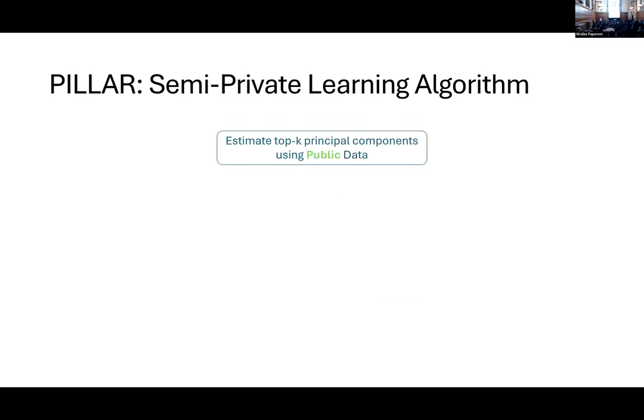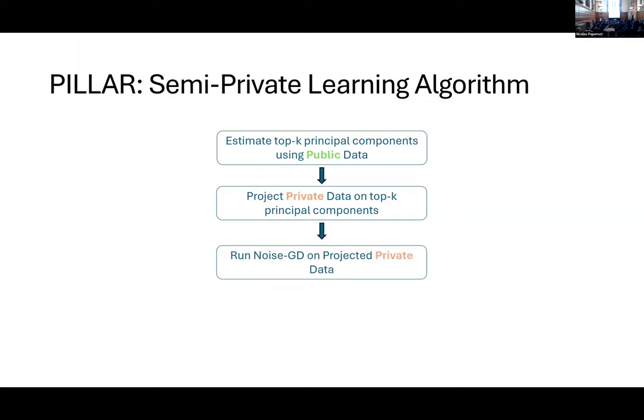We propose an extremely simple algorithm that uses the public data to estimate the top K principal components. Then what it does is it projects the private data on top of the K principal components we have estimated at the previous step. And then we run whatever learning DP algorithm we care about, in this case noise-GD, and we do it on the projected private data. What we get as an output is a linear classifier that satisfies the epsilon-delta guarantees.